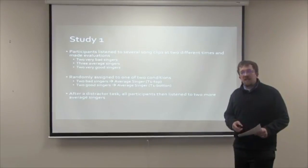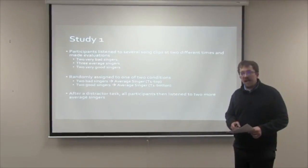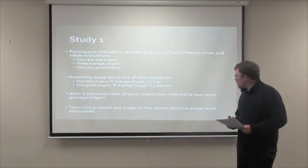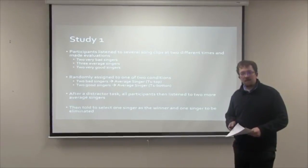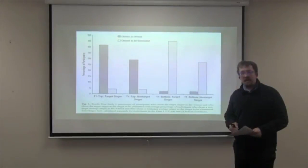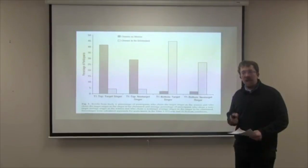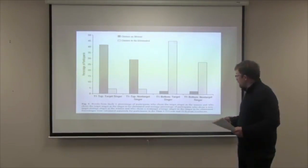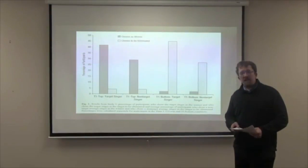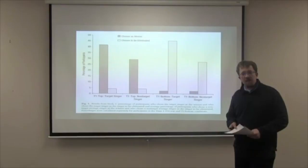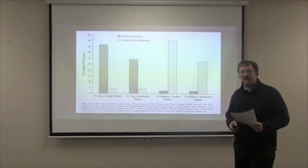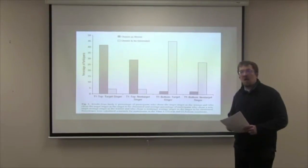After listening to these individuals, participants completed a distractor task and were then asked to listen to two more average singers, and were told to select one singer as the winner and one to be eliminated. As shown in the graph, when the average singer was paired with the bad singer in the T1 top condition, the average singer was frequently selected as the winner. However, when paired with a good singer in the T1 bottom condition, the average singer was frequently selected for elimination. Essentially, the results demonstrate that the evaluation of the average singer depended on relative comparison to either the very good or very bad singer.